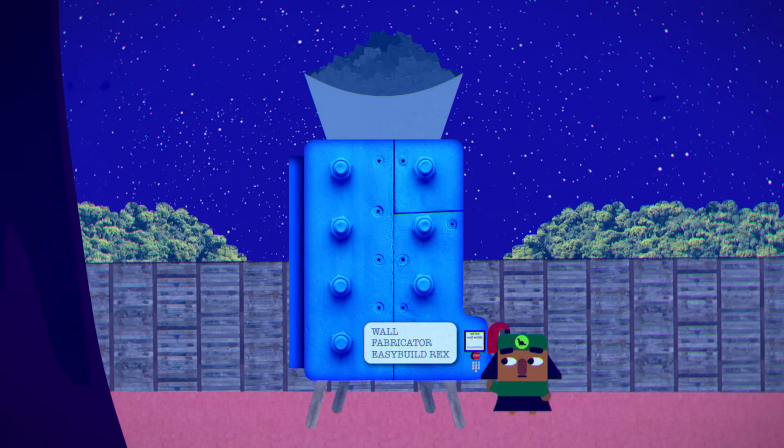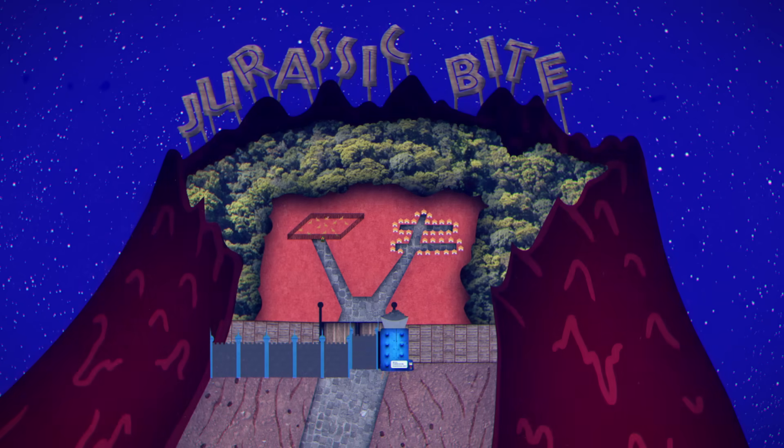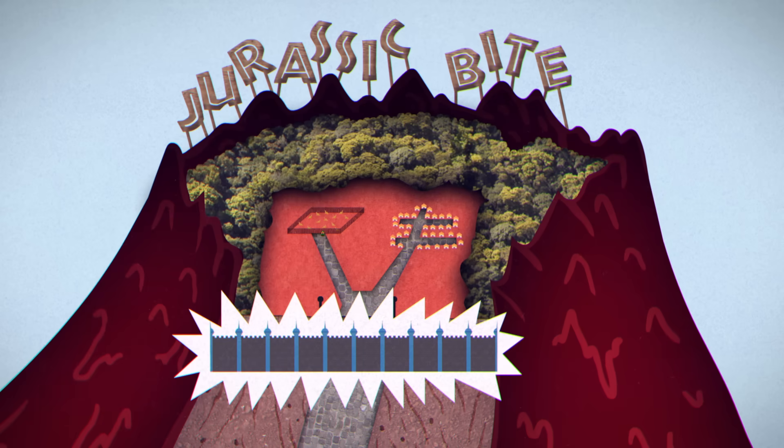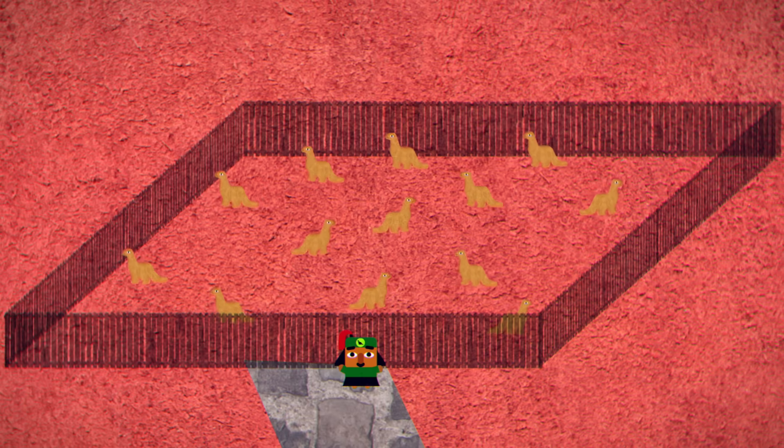And there you have it. You plug 43 into the wall fabricator, and after a tense night, the sun rises on your now impregnable fortress and a herd that won't become unhappy meals.